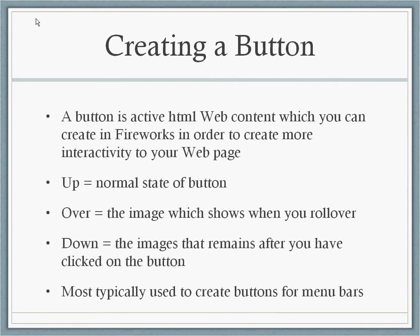Some new vocabulary you'll learn. Up is the normal state of a button — this is what it would look like if you were nowhere near the button or you hadn't clicked on it. Over is what it'll look like when you actually roll your mouse over the image. And down is what it'll look like after you've clicked it. The most common use for doing this would be to create buttons for menu bars in Fireworks.